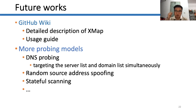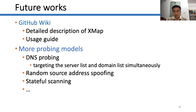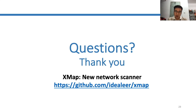For example, the DNS probing module takes two files as input and can query each domain in the domain list. The source address spoofing module can fix source addresses as configurable. I'm also considering a stateful scanning module for some special scanning use cases. So this is XMap and what you can do with it. Thank you all for your attention.